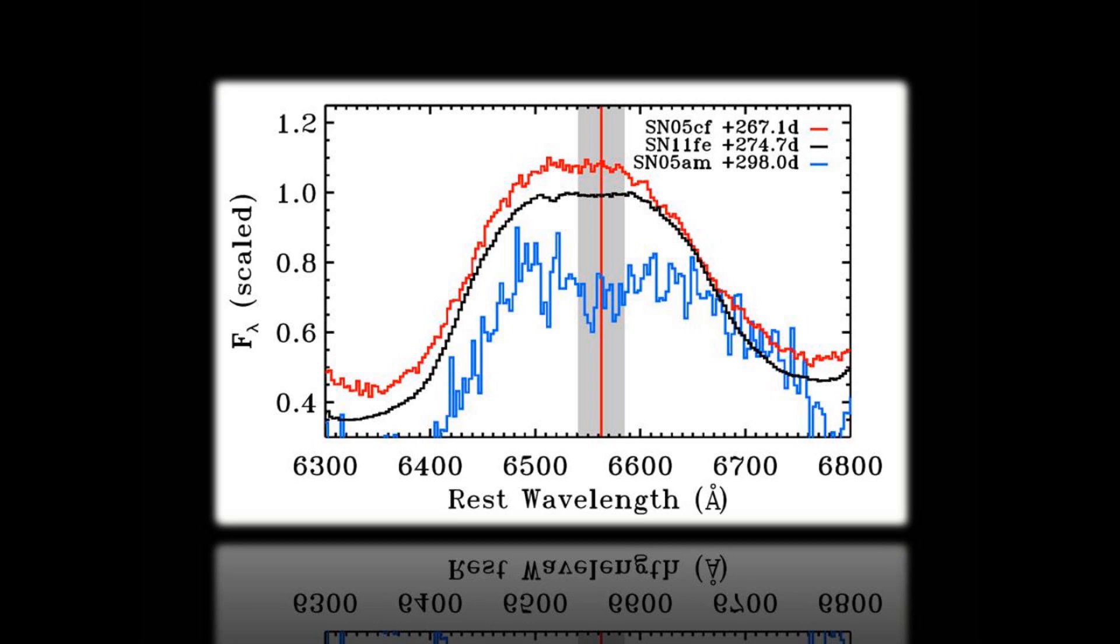In Figure 3, we compare our nebular phase spectrum to the nebular phase spectra of supernovae 2005 CF and 2005 AM, on which the previous best H-alpha limits were based. The rest wavelength of H-alpha is indicated by the vertical red line, and the gray shows the 1000 km/s region around H-alpha where hydrogen emission would be expected. As can be seen in the figure, our spectrum has a substantially higher signal-to-noise, which allows us to place stronger limits than previous studies.